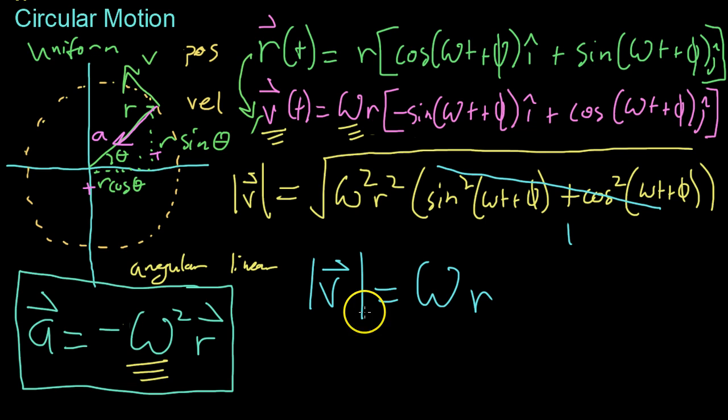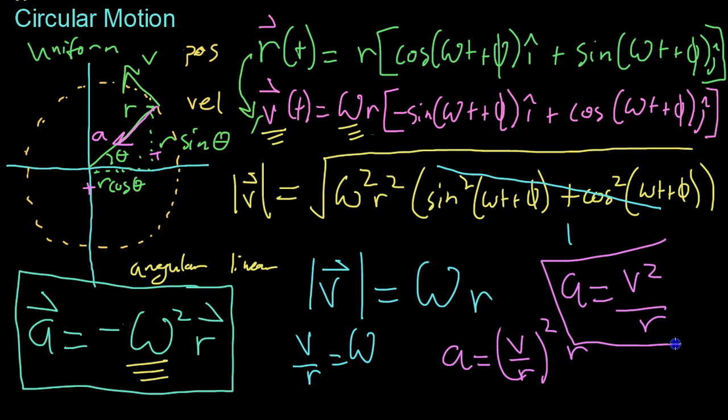Now, plugging in v over r for omega into this acceleration equation, we get that a equals v over r squared times r, or that a equals v squared over r.